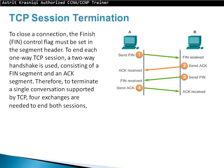TCP session termination: to close a connection, the FIN control flag must be set in the segment header. To end each one-way TCP session, a two-way handshake is used, consisting of a FIN segment and an ACK segment. Therefore to terminate a single TCP connection — which supports two one-way sessions — four exchanges are needed. The client sends a FIN, the server acknowledges it, then the server sends its own FIN, and the client acknowledges that FIN.